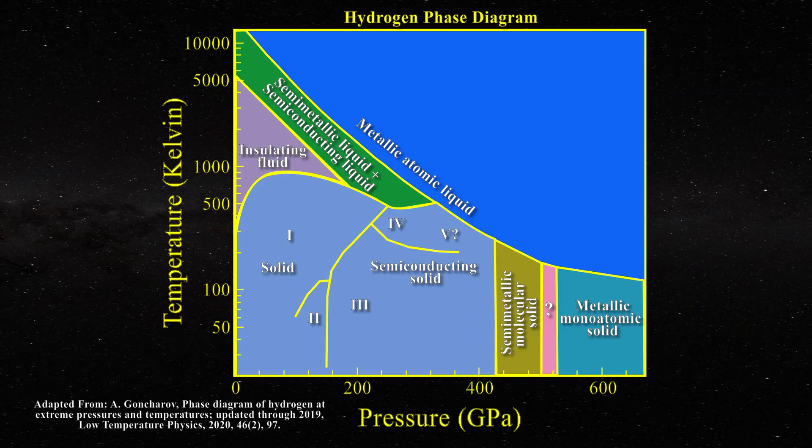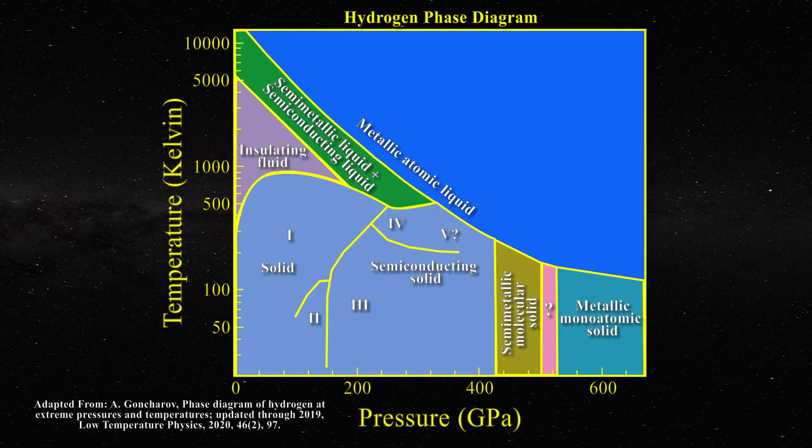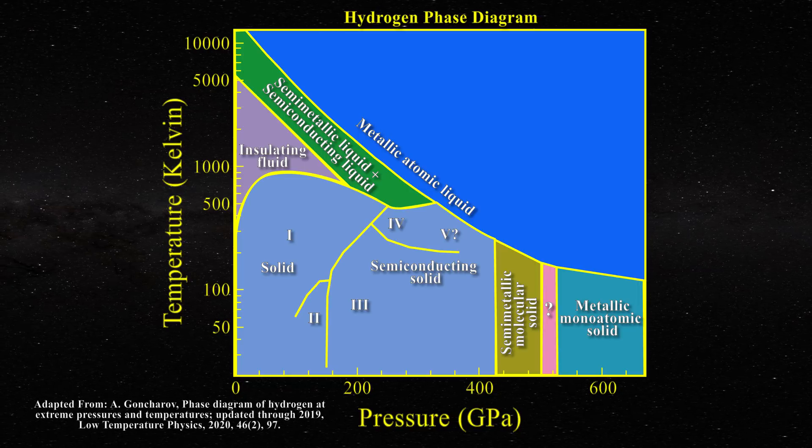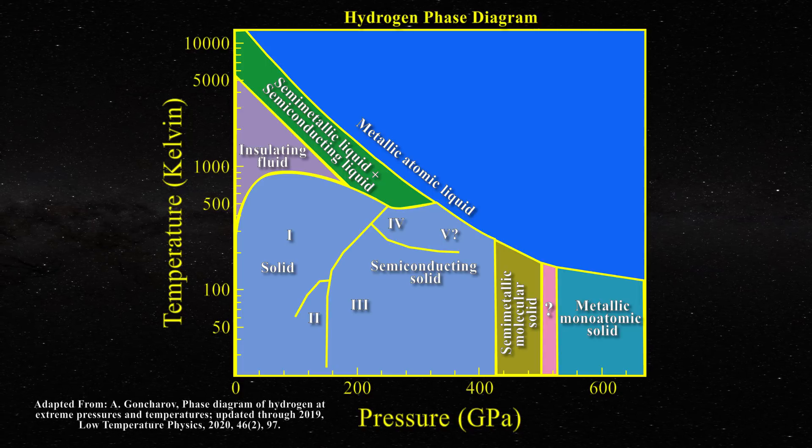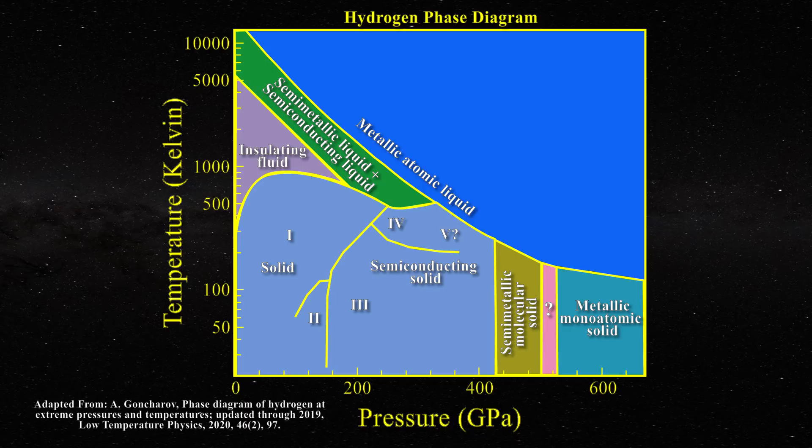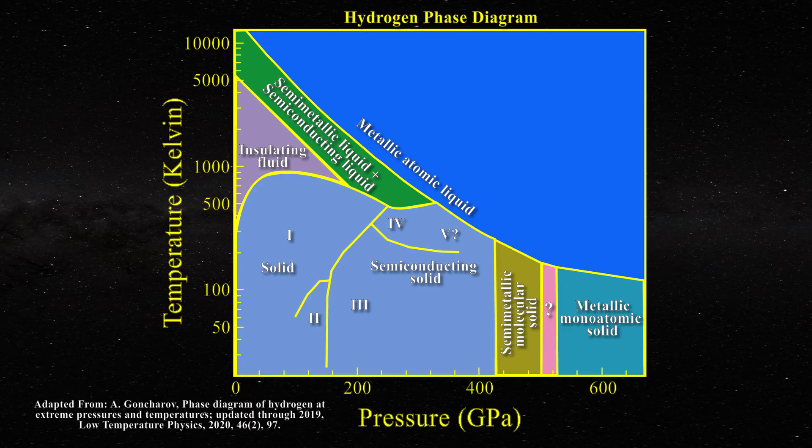At the same time, remember, it is difficult to properly measure extreme pressures and temperatures on small samples. As a result, considerable controversy exists in the scientific community relative to many aspects of the hydrogen phase diagram. Nonetheless, almost everyone agrees on the general features.